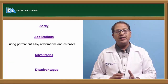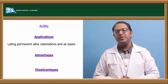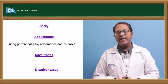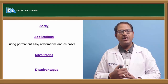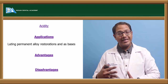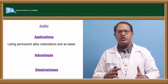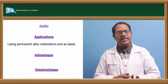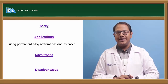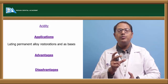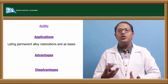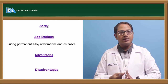Regarding pulp response, zinc polycarboxylate cement has a milder response than zinc phosphate. Though its initial pH of 2.5 is also acidic, rising to pH 6 in about 48 hours, the particle size of zinc polycarboxylate is very large — too large to enter dentinal tubules and reach the pulp. Therefore, the mild pulp response occurs because it cannot reach the pulp.